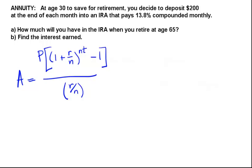I'm going to begin with the formula for an annuity. A, which stands for the final value, is equal to P, which is the periodic deposits. In our case, our periodic deposit is $200.